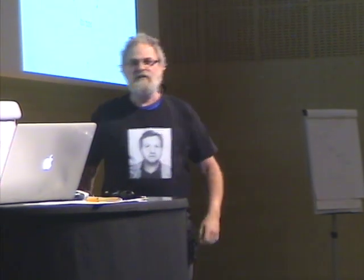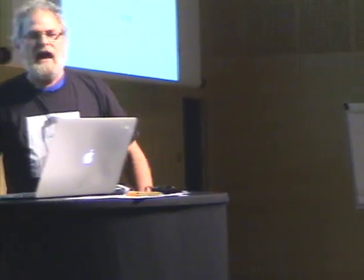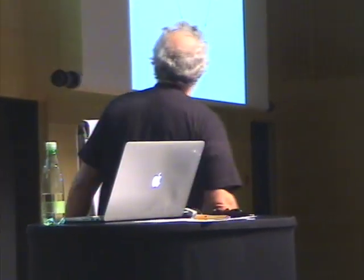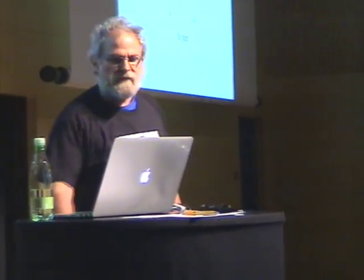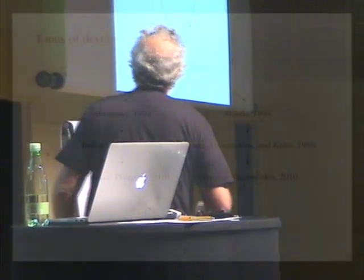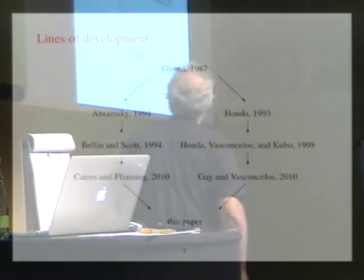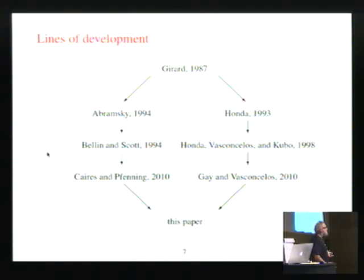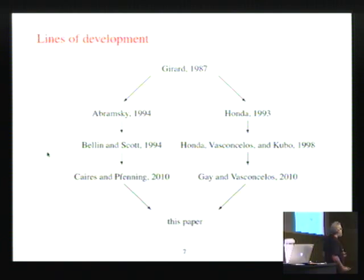Jean-Yves Girard. So this is Jean-Yves Girard. And back in 1987, he published a paper on linear logic. And right from the start, everybody said, this is it — this is the logic that will correspond to concurrency. And he had the same idea himself. One of the logical operators of the logic was called par, for parallel.